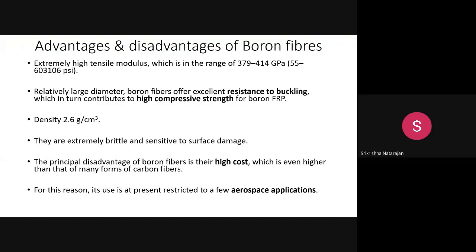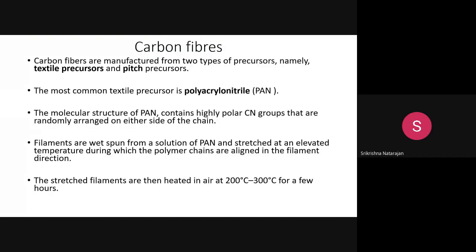We shall continue to the next type of fiber — carbon fibers — which you are already familiar with from previous lectures on man-made fibers. Carbon fiber is one of the most important fibers used in composite manufacture. The raw materials for carbon fiber are polyacrylonitrile (PAN/acrylic), pitch (a byproduct of petroleum), and viscose rayon. Among these, polyacrylonitrile is most commonly used.